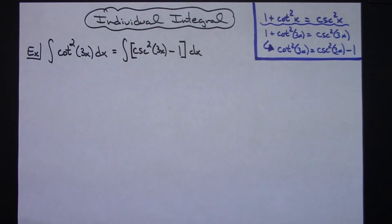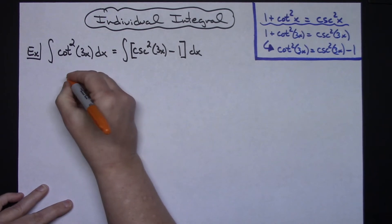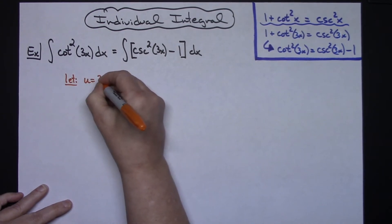Now from here it's going to be a straight u substitution because I do have a nice little 3x sitting there as an inside function. So I'm going to let my u be 3x.